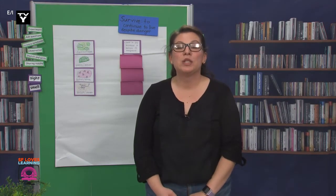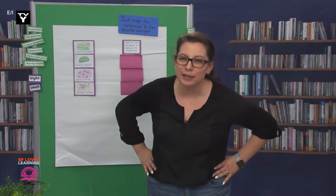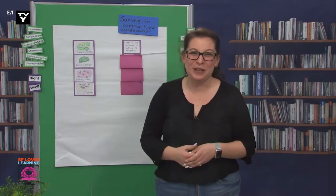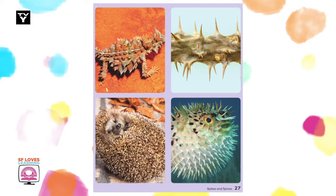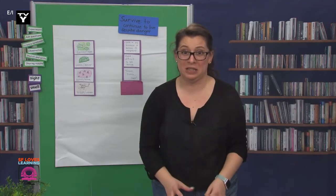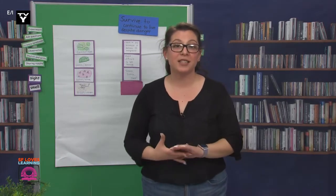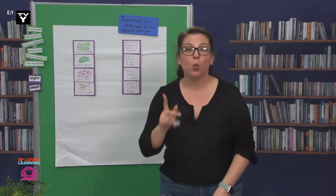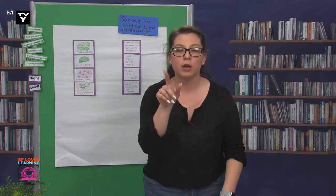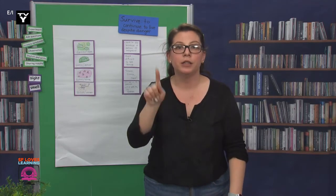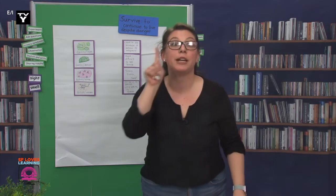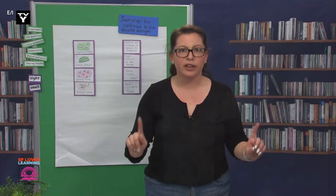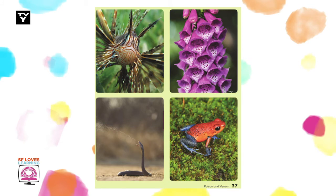The next defense I learned about was spikes or spines. Do I need to explain this defense? I didn't think so. But let's check out some living things with these defenses. Just imagining all those sharp things made me cringe. The last defense I learned about was poison or venom. When a living thing is poisonous, you have to eat it to get a reaction. And if a living thing is venomous, it has to bite you to give you a reaction. I think I got that right. Let's look at some examples of poisonous or venomous living things.